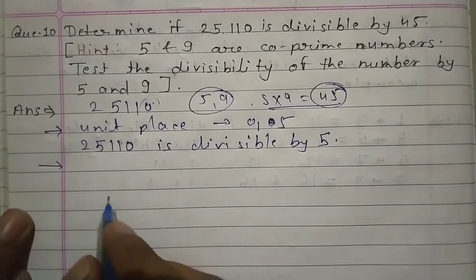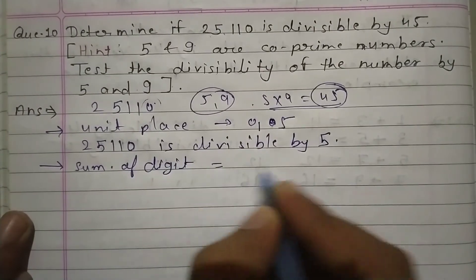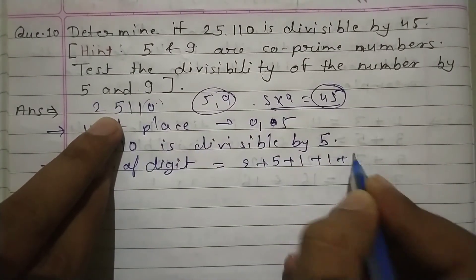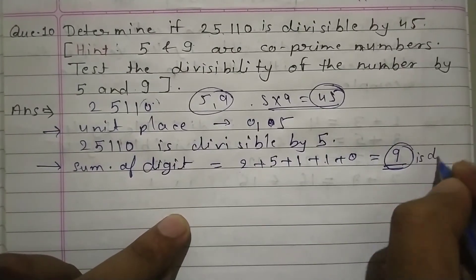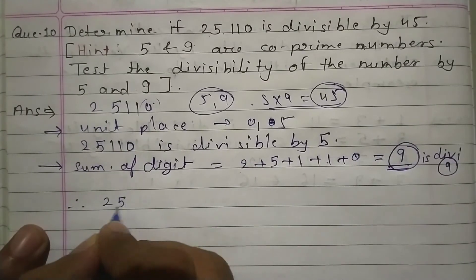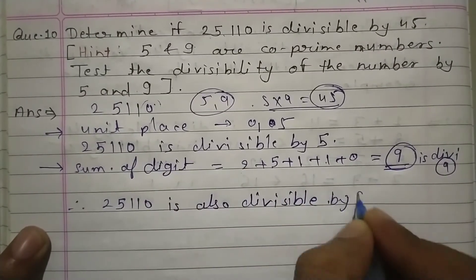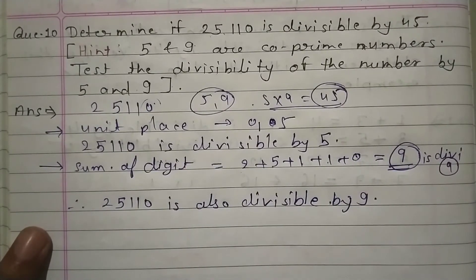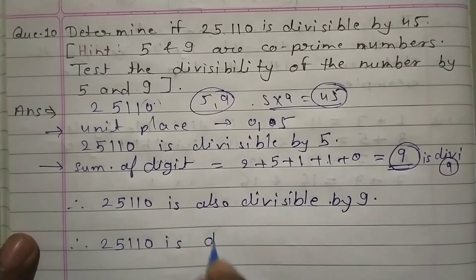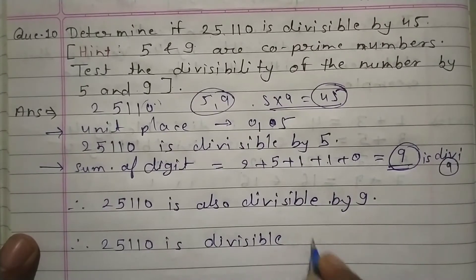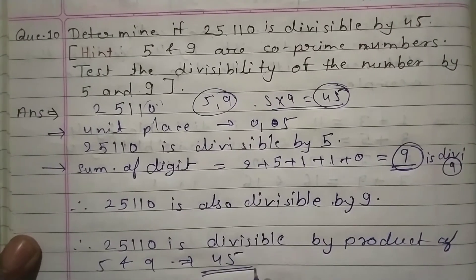The unit digit of 25110 is 0, therefore 25110 is divisible by 5. Now check divisibility by 9: find the sum of digits. 2 + 5 + 1 + 1 + 0 = 9. This 9 is divisible by 9, so 25110 is also divisible by 9. Since 25110 is divisible by both 5 and 9, therefore 25110 is divisible by their product 5 × 9 = 45. Question number 10 is complete.